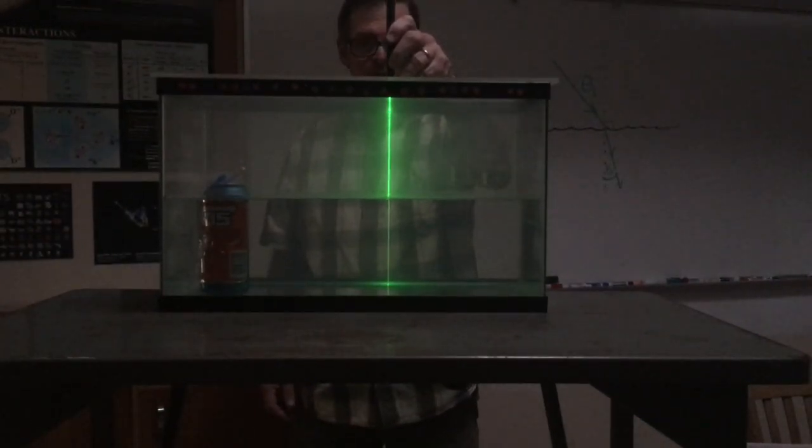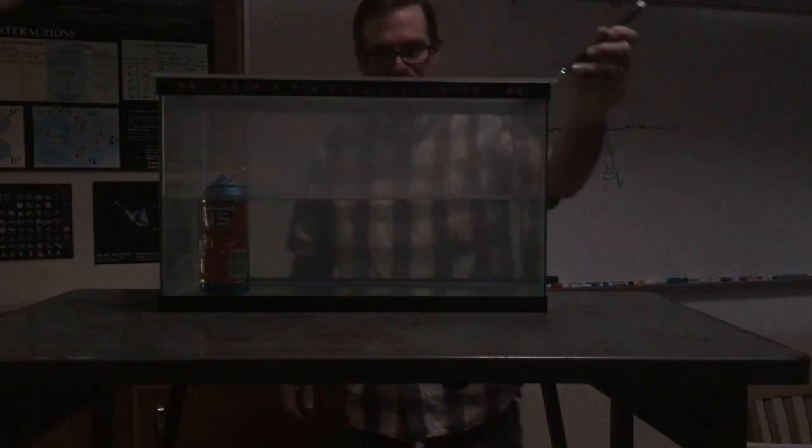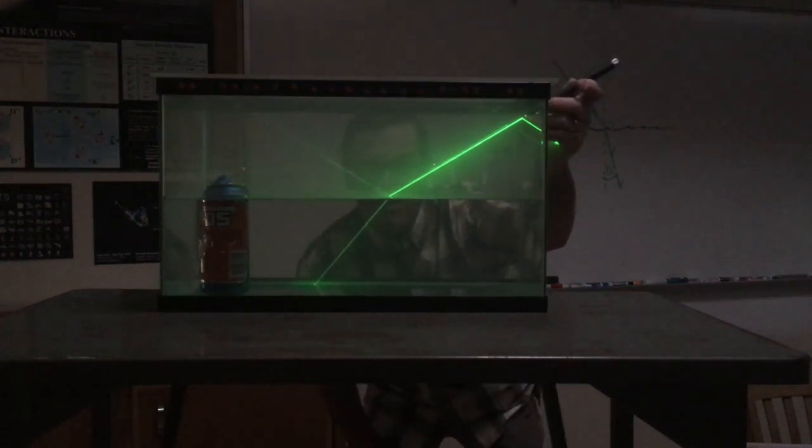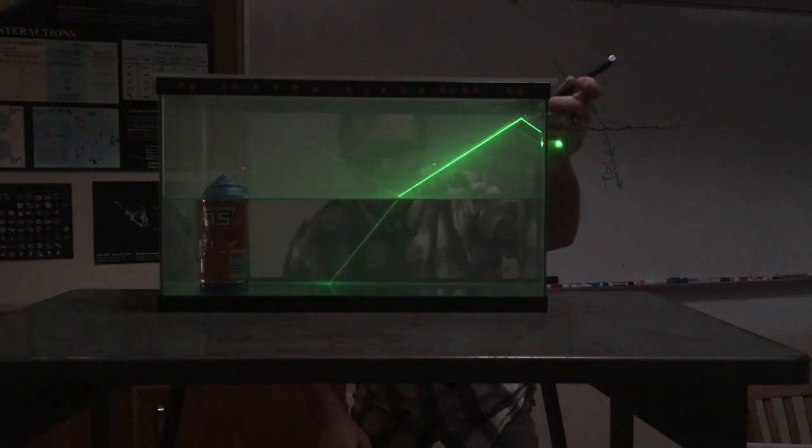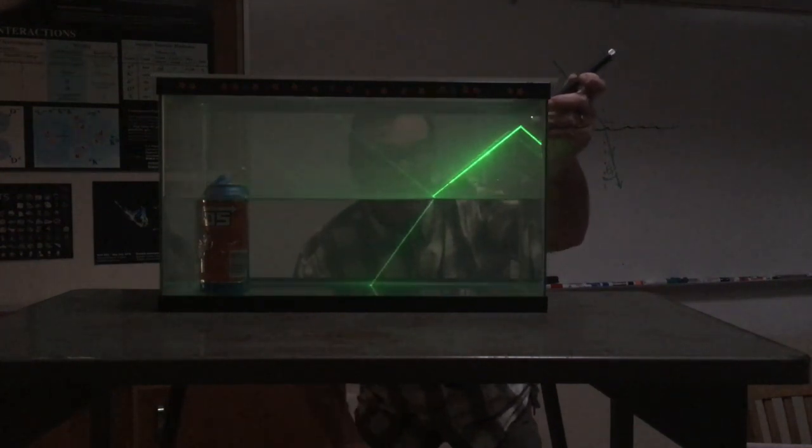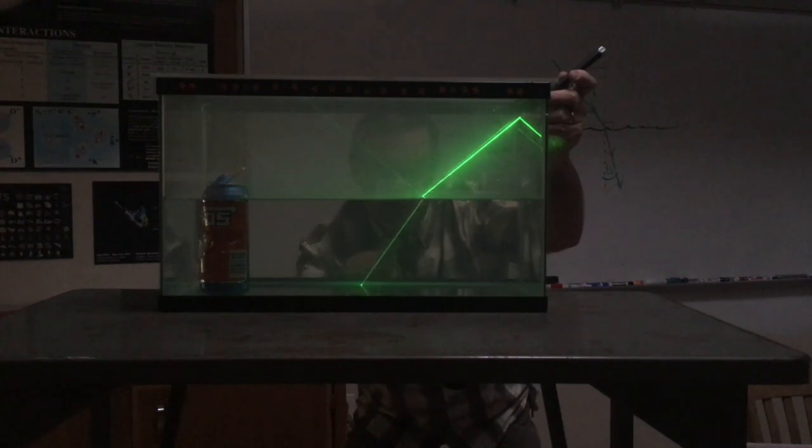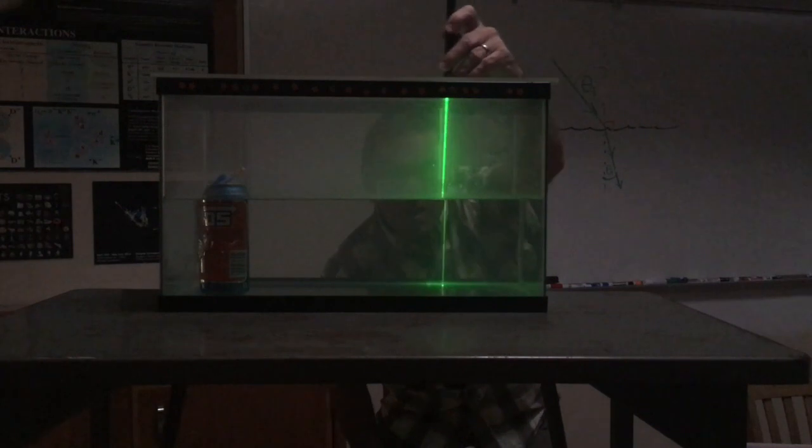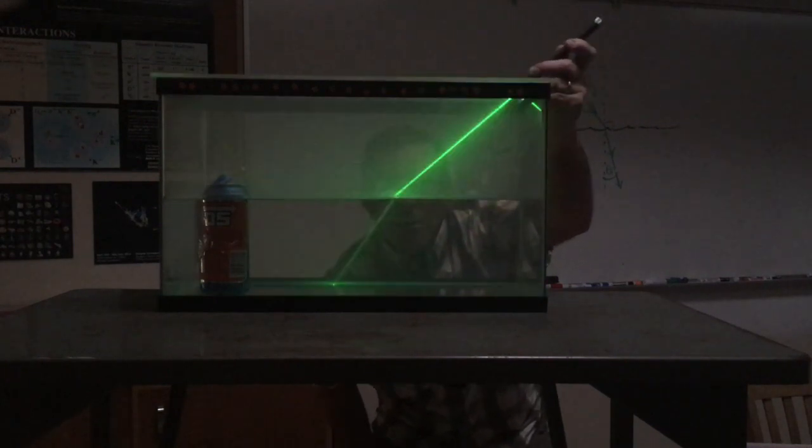But if I come in at an angle, now you can see, again, some of it is reflected off of the top surface. But a good amount of the light is transmitted into the water, and I think you can see that it bends relative to the normal.